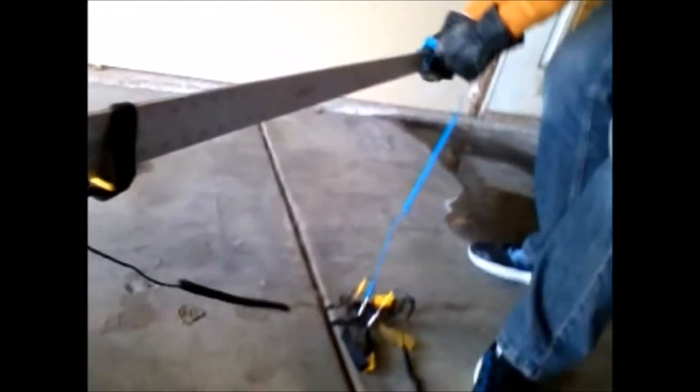So what we've done here is we've taken antistatic wrist straps like you use in computer repair, and we've hooked them up to this metal T-ring bar measuring stick thingy, and hooked those up to the frame of the TV itself.